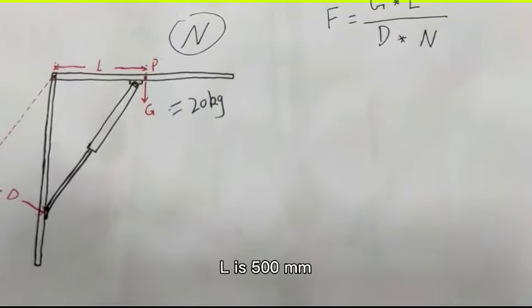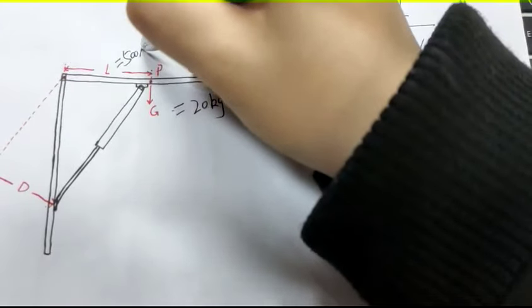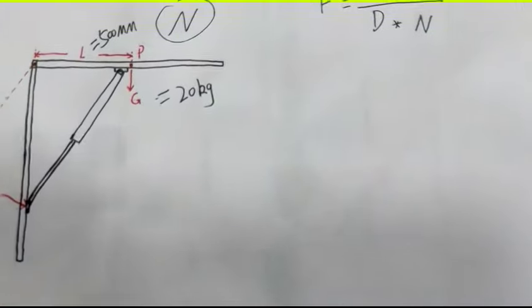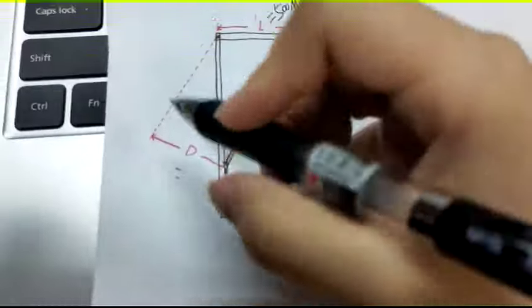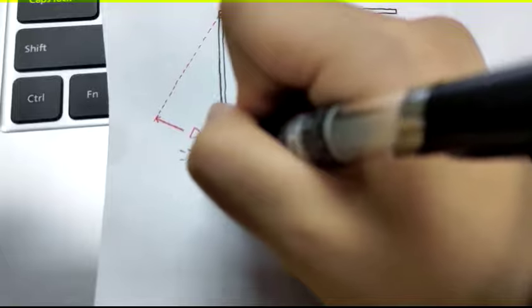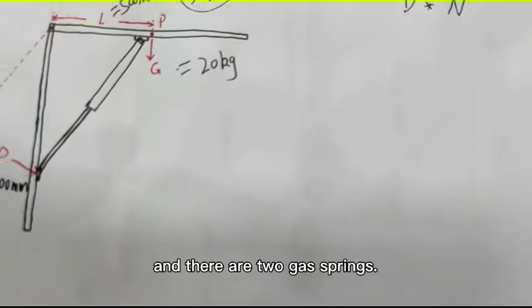L is 500 mm. D is 300 mm. And there are two gas springs.